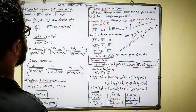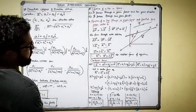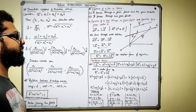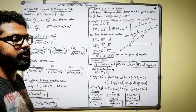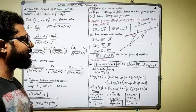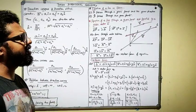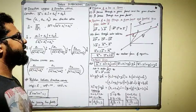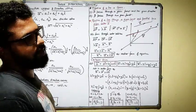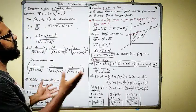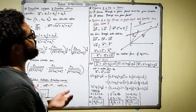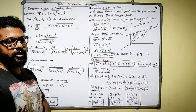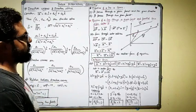We will begin with the next topic of mathematics. The previous chapter was vectors, and this chapter, three-dimensional coordinate geometry, is just a continuation of that. There is not much to differentiate between the two. Though they are classified as two different chapters — three-dimensional coordinate geometry and vectors — this is just the continuation of vectors.